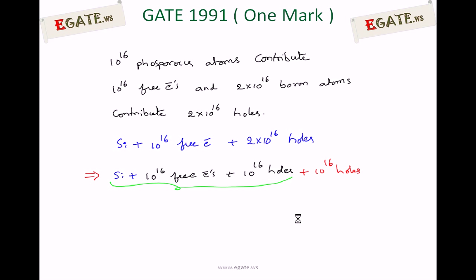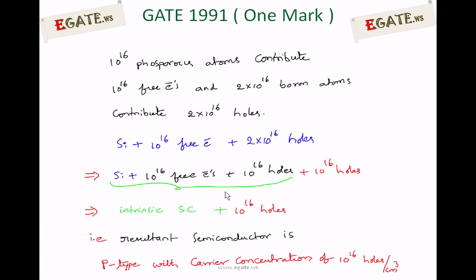Observing the green line: silicon plus 10^16 free electrons plus 10^16 holes — since silicon itself is an intrinsic semiconductor where free electrons equal holes, adding equal amounts of free electrons and holes is also treated as intrinsic. So that portion cancels out, leaving intrinsic semiconductor plus 10^16 holes. The effective doping is 10^16 holes.